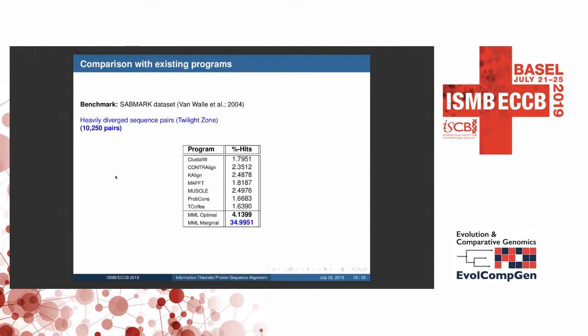And this is for a much difficult data set. We took SABRE Twilight data set, Twilight Zone data set, around 10,000 pairs.